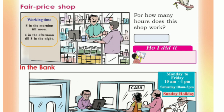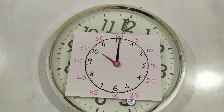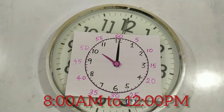Now take your textbook and look at the picture. There is a shopkeeper, and it is written that the working time of the shop is from 8 in the morning till noon, and from 4 in the afternoon till 8 at night. They are asking: for how many hours does this shop work in total?